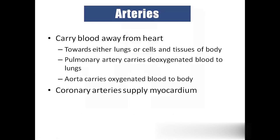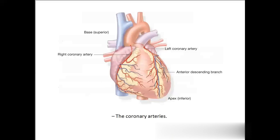Arteries always carry oxygenated blood, except for one: the pulmonary artery, which carries deoxygenated blood to the lungs. The aorta carries oxygenated blood to all body parts. Coronary arteries supply blood especially to the heart muscle called myocardium — these are branches from the aorta. And these are the coronary veins, which drain blood into the right atrium.